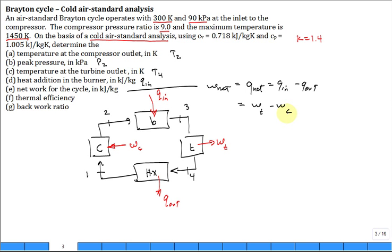Thermal efficiency, the ratio of work net to Q in and the back work ratio of the work that goes back to the compressor to feed the compressor divided by work of the turbine.